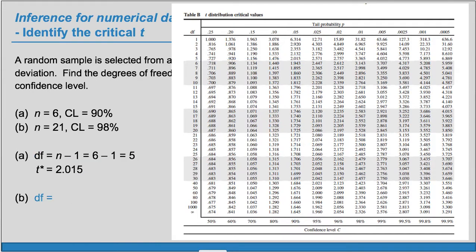Part b, what will be the degrees of freedom? n-1 in this case is 20. And now use row 20 and a confidence level of 98% and find t-star.